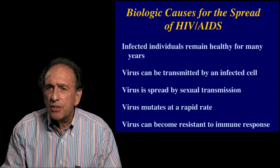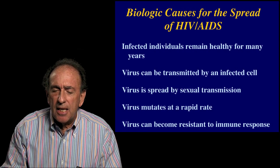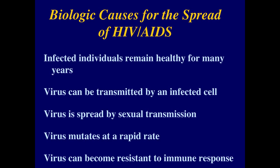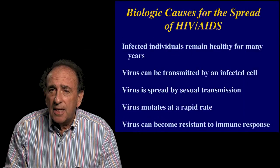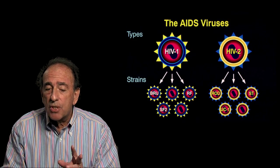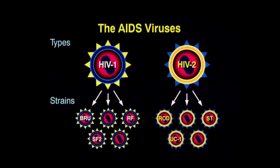What are the biologic causes that lead to the spread of HIV and AIDS? The infected individual can remain healthy for many years — up to 10 years before symptoms appear. The virus can be transmitted by infected cells, it spreads by sexual transmission, and we've yet to conquer a sexually transmitted disease. It mutates at a rapid rate and is resistant to the immune response. There are two types, HIV-1 and HIV-2, differing by up to 40 percent, and each has subtypes that differ by 10 to 20 percent.